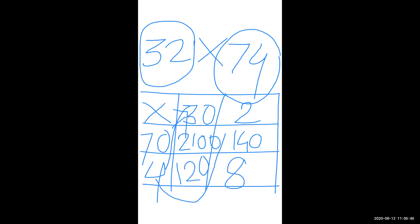Next, 30 into 4, your answer is 120. And 4 into 2, your answer is 8. You need to learn your tables — I was explaining this before the multiplication chapter started. Now add all four numbers: 2100 plus 140 plus 120 plus 8. Your answer is 2368.